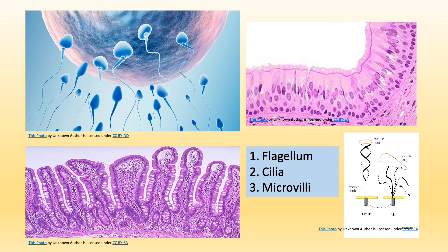You can see microvilli in small intestine epithelia. You can see cilia in the respiratory tract epithelia, or in the fallopian tube to move the egg. And flagellum — there is only one human cell that has a flagellum: it is the tail of a sperm cell. That is the only cell with a flagellum found in humans.